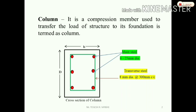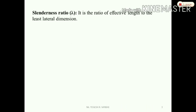The next topic is the slenderness ratio. It is the ratio of effective length to the least lateral dimension. A column has two cross-sectional dimensions: B (width) and D (depth). The slenderness ratio formulas are: λ = L_eff / B and λ = L_eff / D, where B and D are the cross-sectional dimensions.